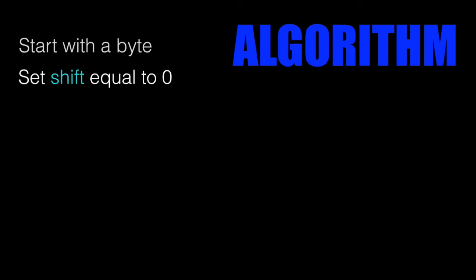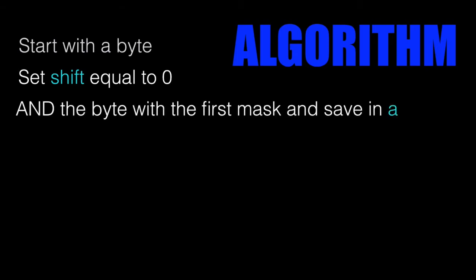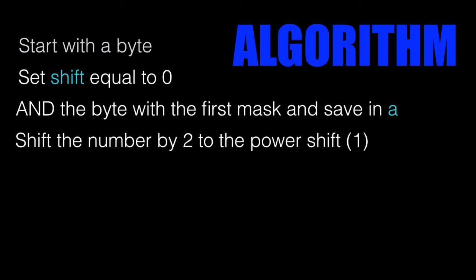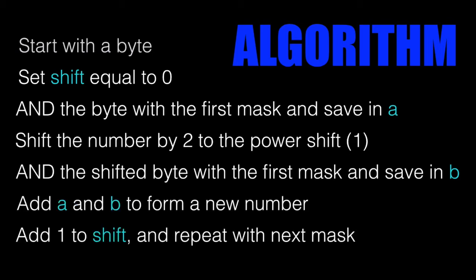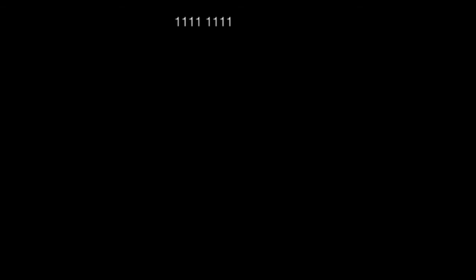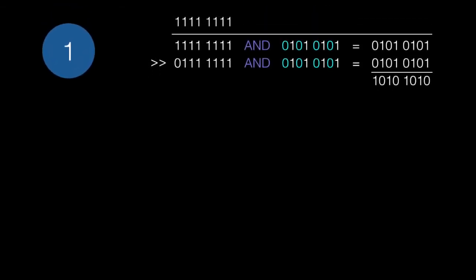Here's the algorithm. We start with our number. For each iteration, we increase a shift. We AND the byte with the first mask, save the value, then shift the number by two to the power of the shift value — so the first iteration shifts by one, the next by two, then four, eight, sixteen, and so on. AND the shifted byte to get a second value, add those two values, increment the shift, and repeat for the next mask. Working through it with minus one — all ones, goal answer eight — AND with the first mask, shift by one, AND again: we get 1,0,1,0,1,0,1,0.